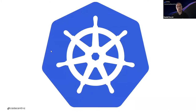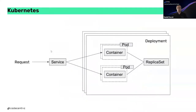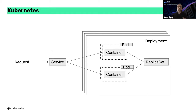When thinking about orchestration, everybody talks about Kubernetes. Kubernetes was open-sourced by Google in 2013, and every cloud provider has a Kubernetes offering, making it a standard. Kubernetes is essentially the deployment of containers in pods, which are connected to a replica set. When a request comes in, a service in Kubernetes connects to the containers in the pod.